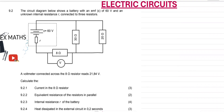Hello guys. In this video we are given an electric circuit question which reads: the circuit diagram below shows a battery with an EMF of 60 volts and an unknown internal resistance, connected to three resistors: 8 ohm, 30 ohm, and 20 ohm. A voltmeter connected across the 8 ohm resistor reads 21.84.